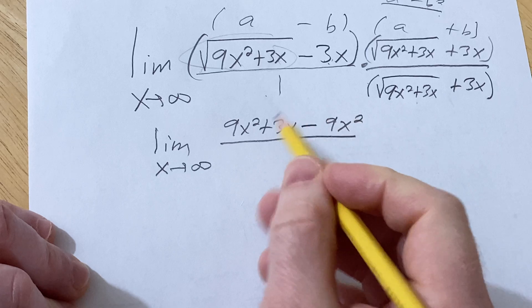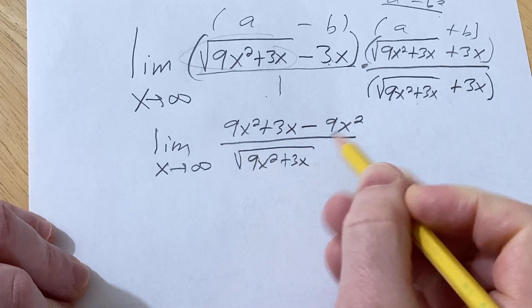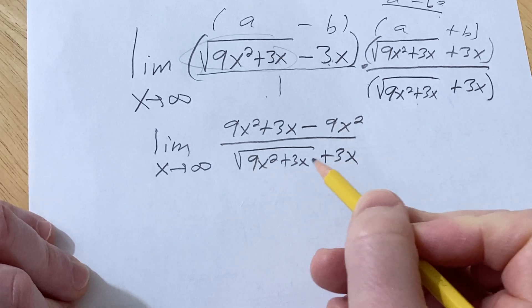Over, and then 1 times this piece is just that piece. So we have 9x squared plus 3x plus 3x.